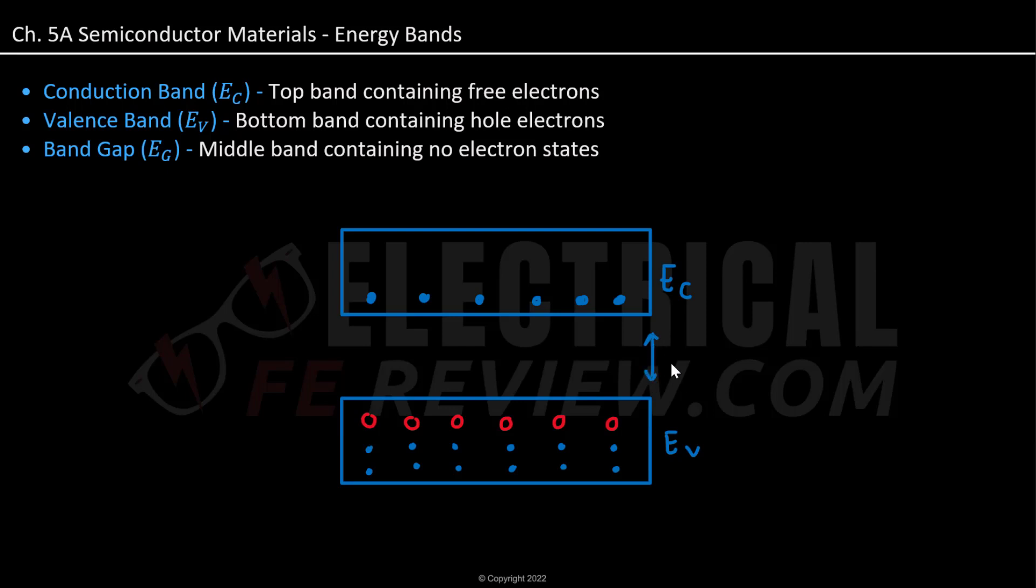And in between, we have our band gap, which is EG. And it doesn't actually have a box, it is just a space in between because there are no electron states.